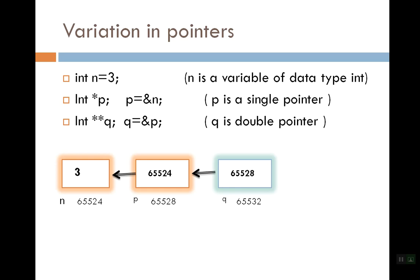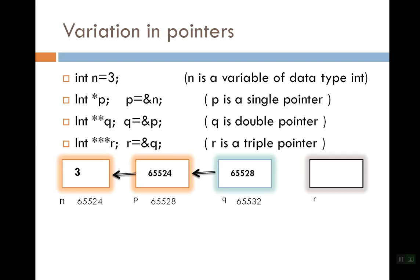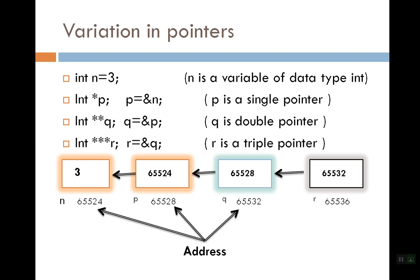This pointer points to the other. We create a triple pointer r and put the address of q into r, so r points to q. The addresses are: N's address 65524, P's address 65528, Q's address 65532, R's address 65536. The values are: N's value 3, P's value 65524, Q's value 65528, and R's value 65532.